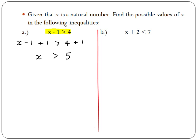Now let's try part b. In part b we are asked x plus 2 is less than 7. We need to subtract 2 from both sides to get x by itself. So we have x plus 2 minus 2 is less than 7 minus 2, giving us x is less than 5.